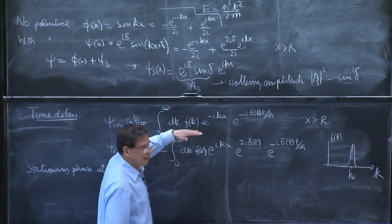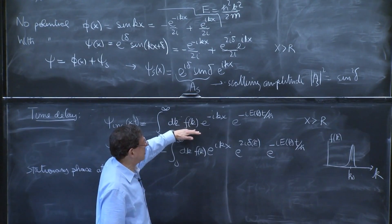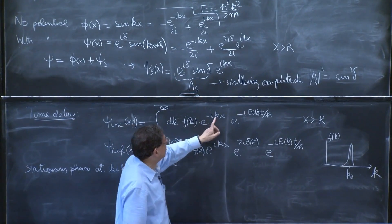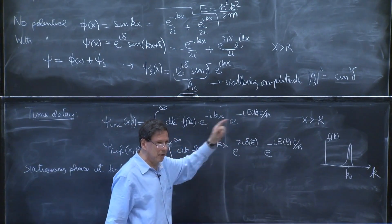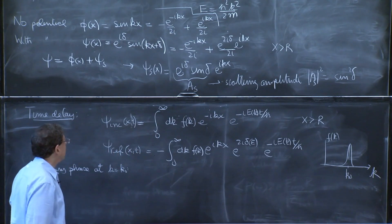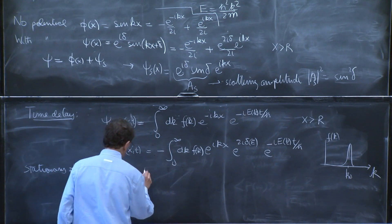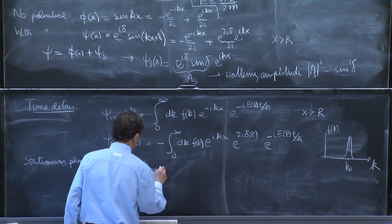As you remember, the only contribution can really come when k is near k0. And at that point, you want the phase to be stationary as a function of k. I will not do here the computation again.